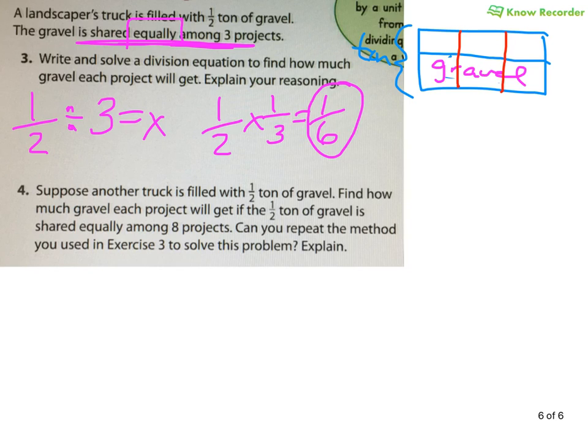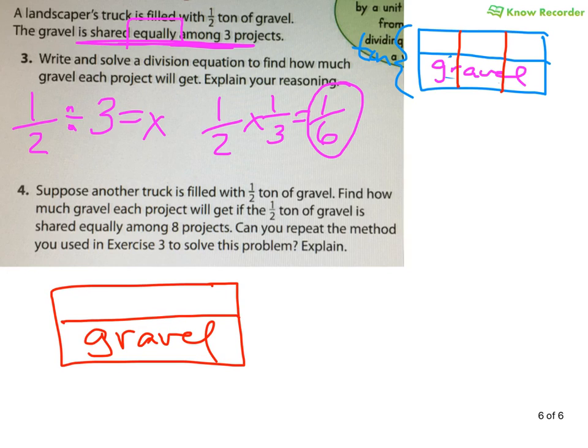Suppose another truck is filled with half a ton of gravel. Find out how much gravel you're going to get from that half ton if it's shared equally among eight projects. Now, I just cut it into eight jobs. Some people looked at me weird today when I did this because you're like, wait, wait, that's 16. Yeah, you can do 16 jobs with a full ton of gravel. We only have half. We had to separate it into eight jobs. This is one job, two jobs, three jobs, four jobs, five jobs, six jobs, odd jobs, eight jobs. Get it? Odd, seven, odd job was a James Bond character through a hat. Very cool character. Anyway, so we're going to break it up into eight.